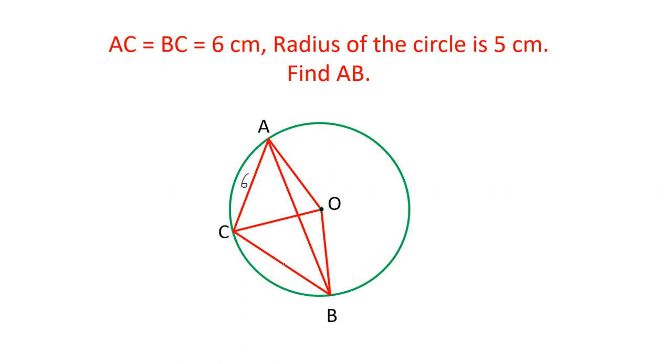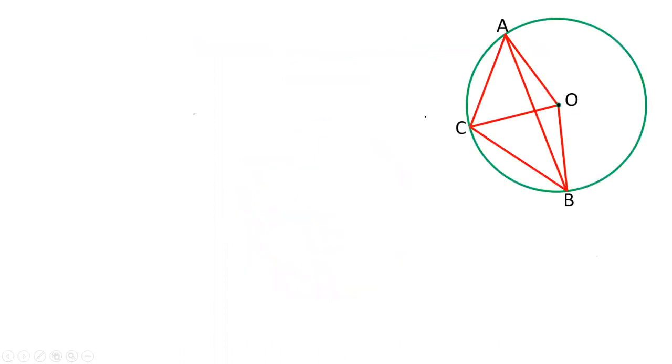AC is 6, BC is 6 cm. We have to find the length of the third chord which is drawn joining the points of these chords A and B, that is AB. The radius is given as 5. We have to calculate this length AB. Let's see how we can calculate this length.